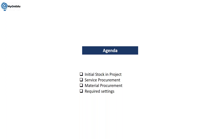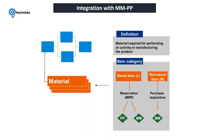Whenever we are assigning any material to a project, we get an item category option. We select the material master and the system asks us to select the item category. You will have two options: item category L, which is for a stock item, and item category N, which is for a non-stock item. For stock items, we get an option to create a reservation; for non-stock items, it goes directly to a purchase requisition.